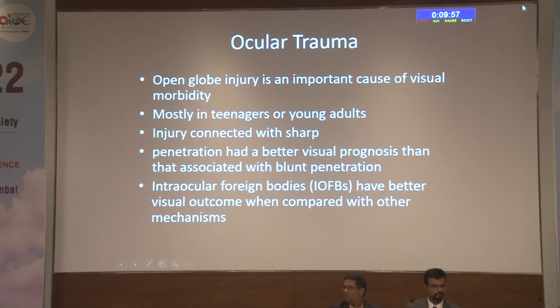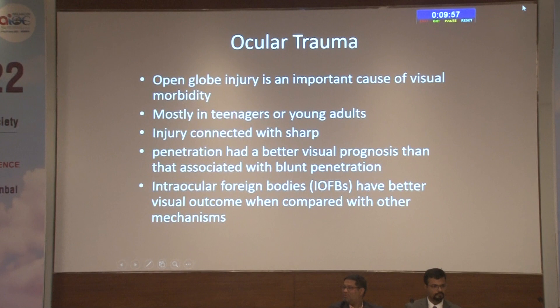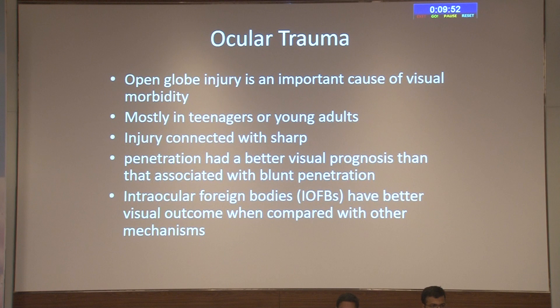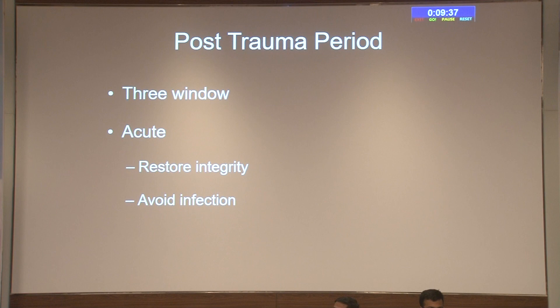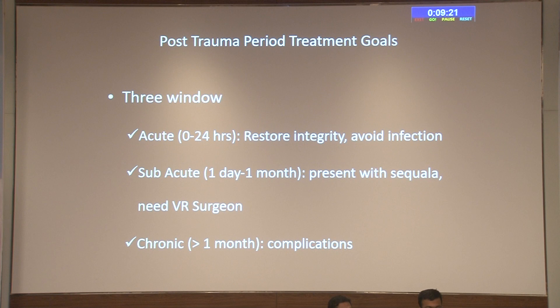Open globe injury is not only an important cause of blindness and morbidity but is also disfiguring and carries significant medico-legal implications. There are three management windows: the first acute window within 24 hours; the second from one day to one month; and the third beyond that. In the acute window, the goal is to maintain integrity and prevent infection, while the later two windows typically present with sequelae and should ideally be referred to vitreoretinal surgeons.